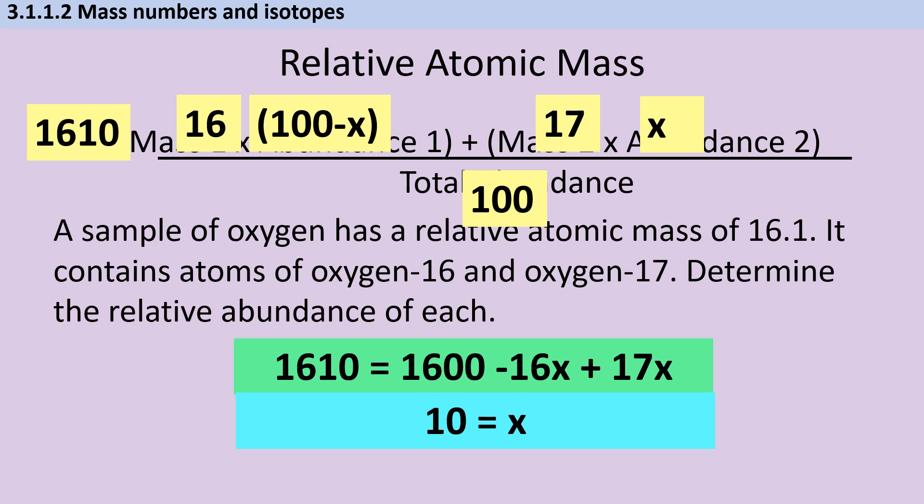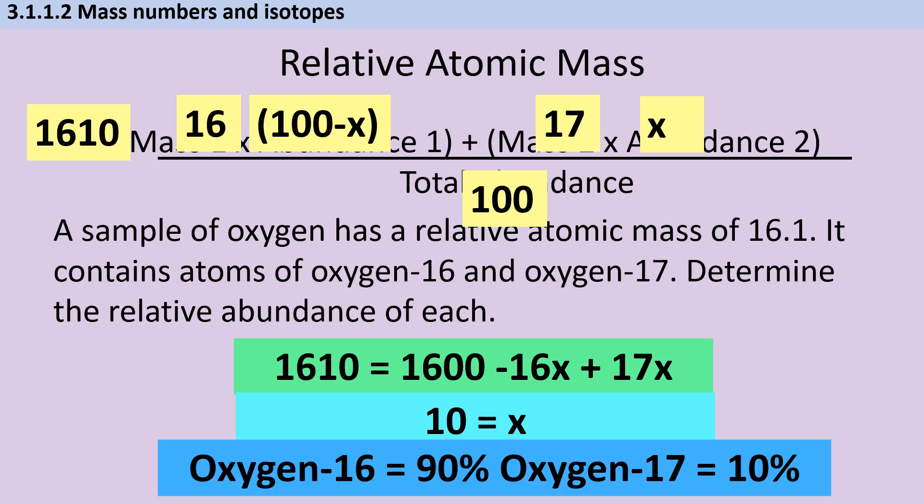But we can't quite stop yet, because the question didn't ask us to solve for X, the question asked us to determine the relative abundance of each isotope. So if X is 10, that tells me that I've got 10% of oxygen-17, and therefore I must have 90% of oxygen-16.